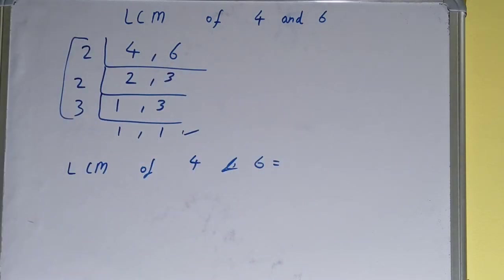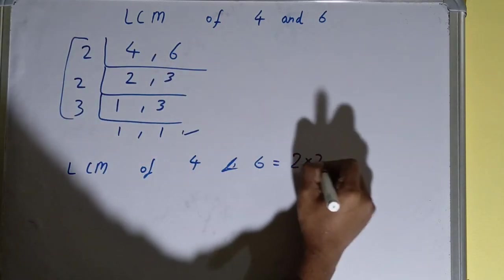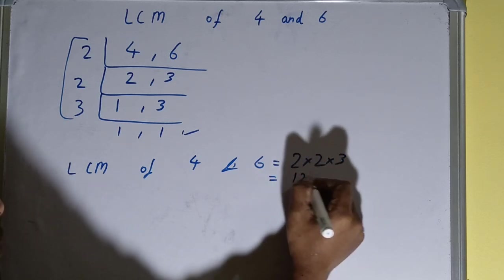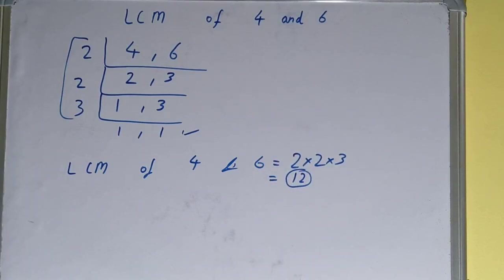Multiply whatever you have on the left hand side, that is 2 cross 2 cross 3. Your answer will be 2 times 2 is 4, 4 times 3 is 12. Your answer will be 12, or your LCM will be 12.